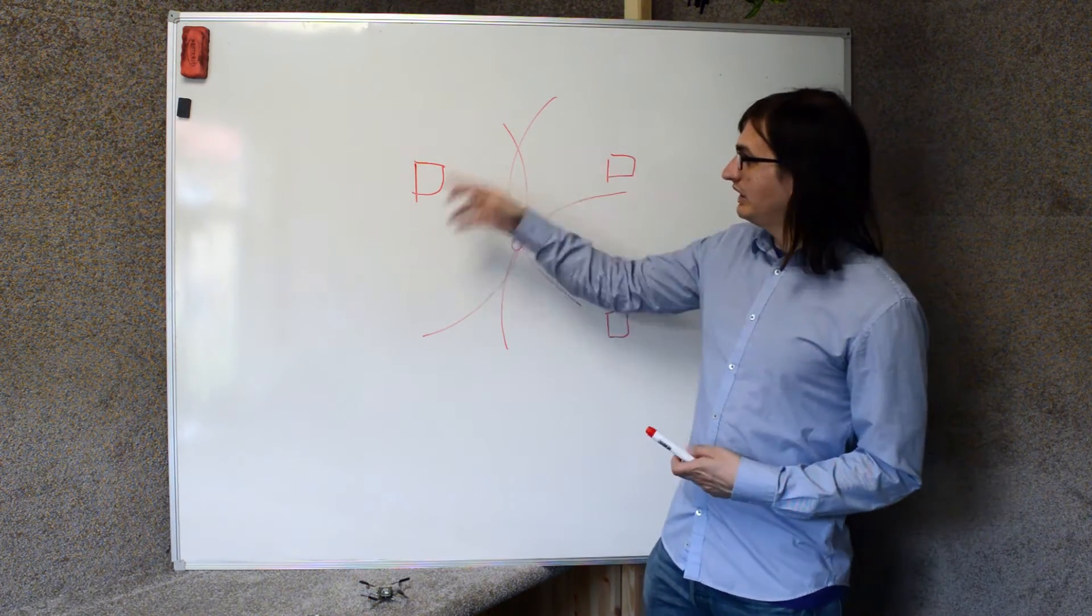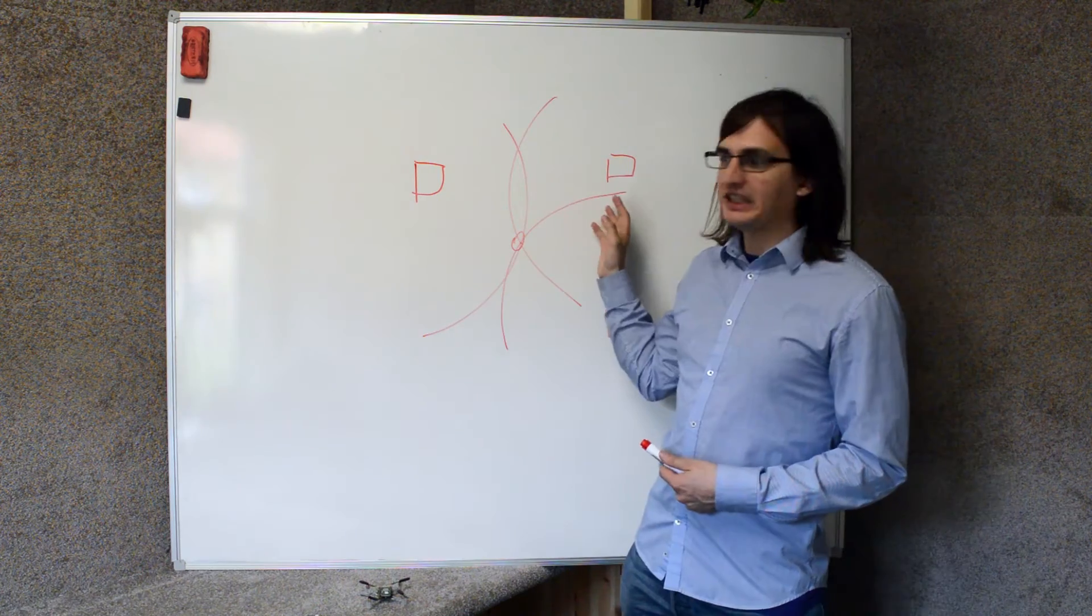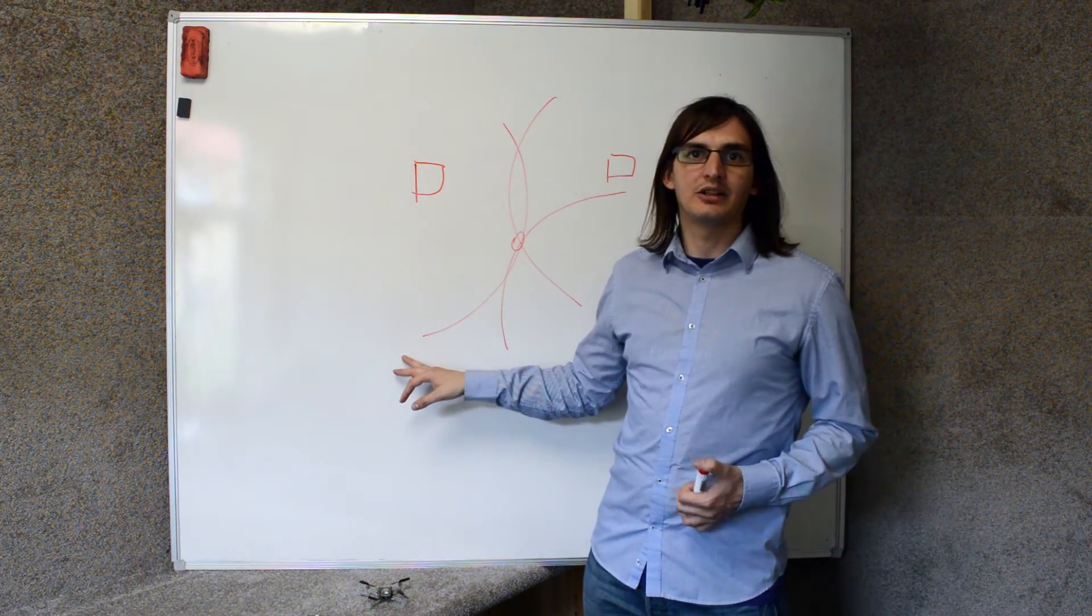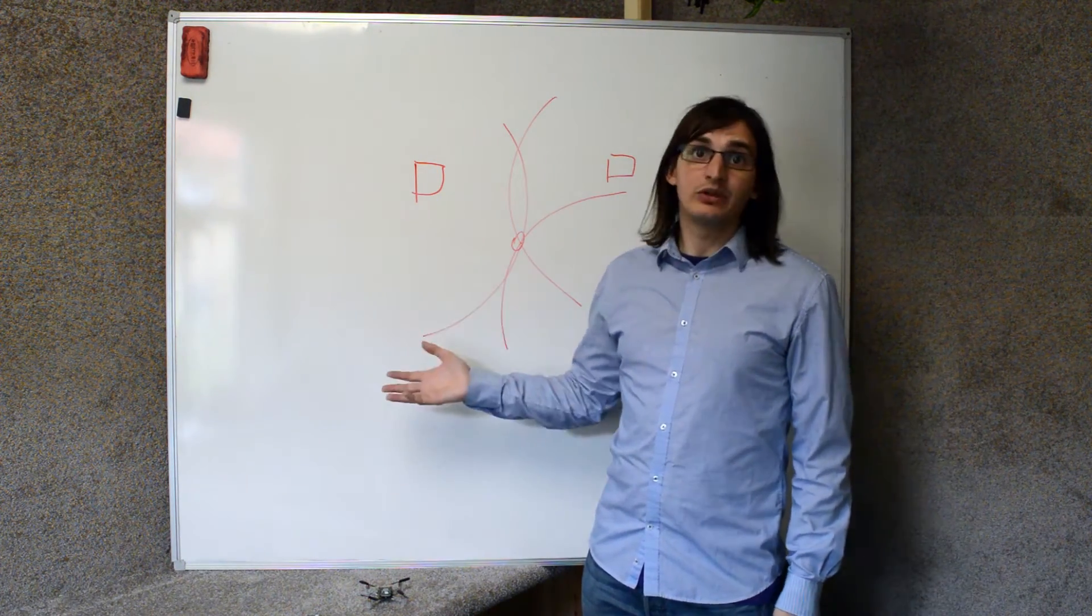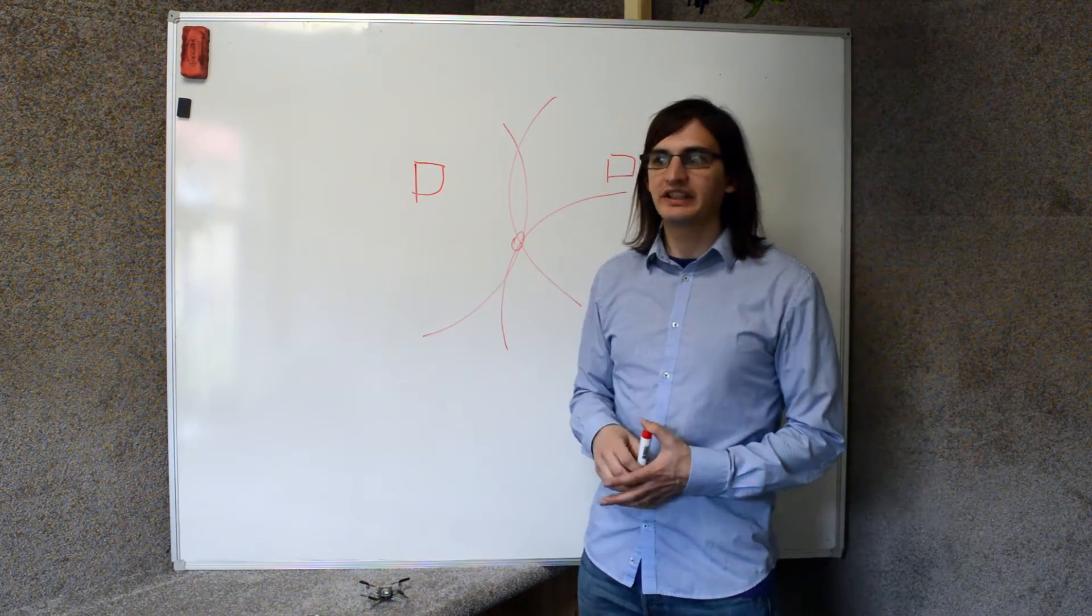As you see, in 2D we need three anchors, in 3D we need four to have a 3D positioning, and we're usually using six to get some redundancy.